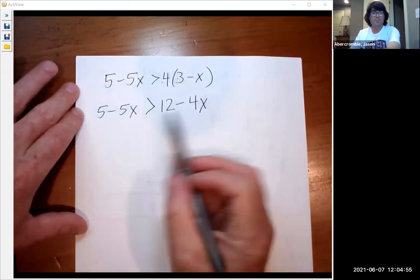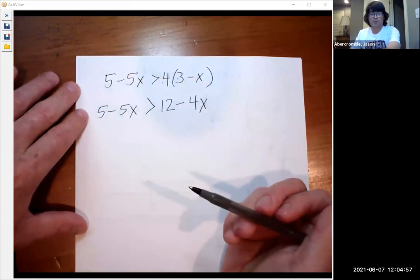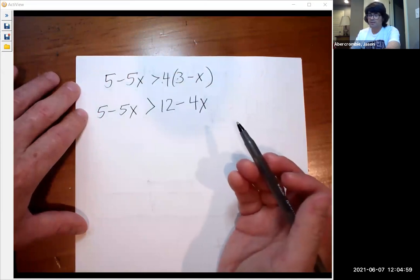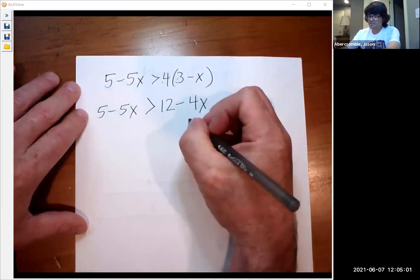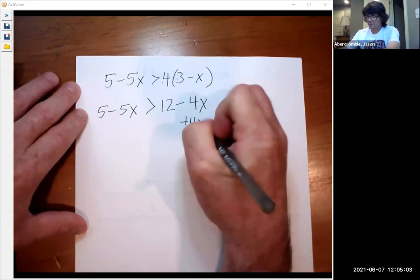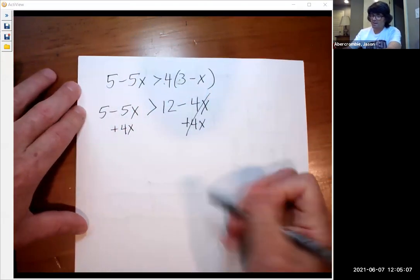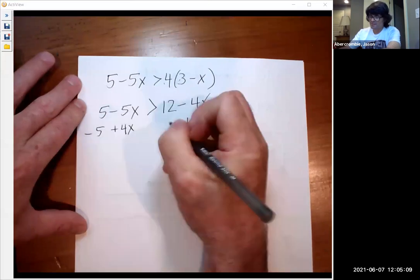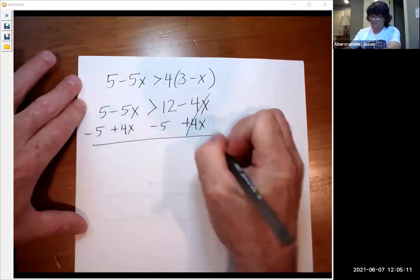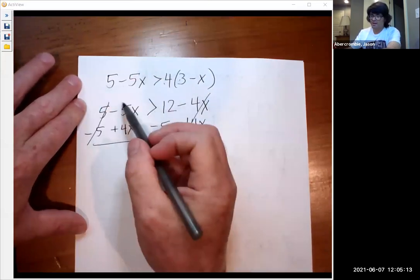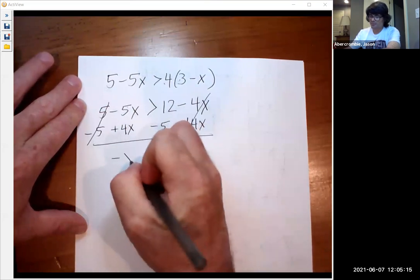And this time, we have x's and numbers on each side. So you get to decide where you want the x. Maybe I'll just move the x's to the left, add 4x to both sides, so we can cancel out that, and then take away 5 from both sides here. Cancel out that.